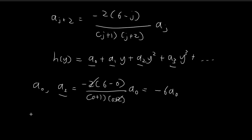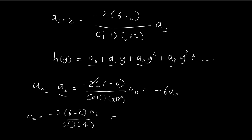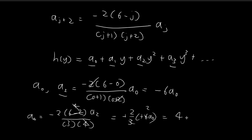Now that we have A2, we can deduce what A4 should be. A4 is equal to negative 2 times (6 minus 2) times A2, divided by (2 plus 1)(2 plus 2), which is 3 times 4. Doing a bit of simplification, the 4 cancels out, giving negative 2 over 3 times A2. Since A2 equals negative 6 A0, substituting in gives A4 equal to 4 A0.